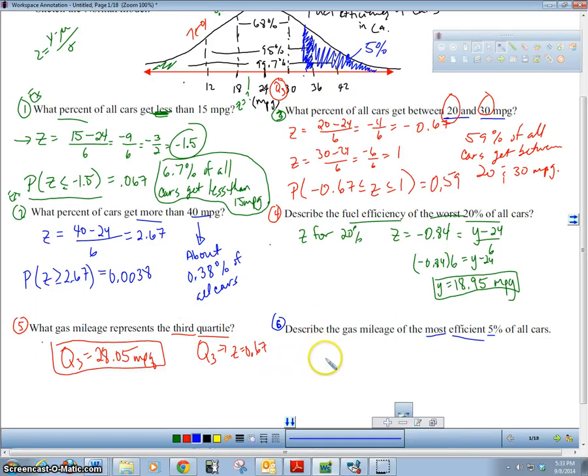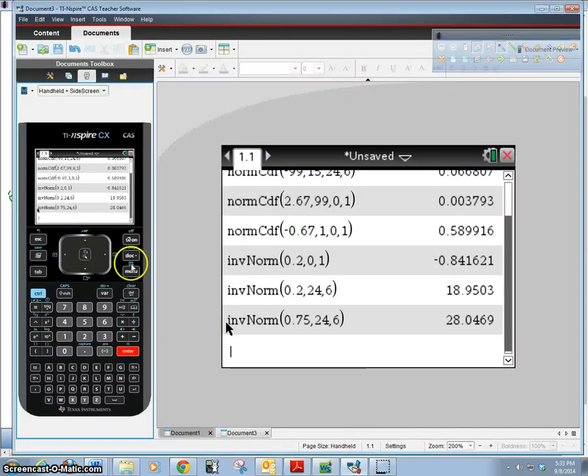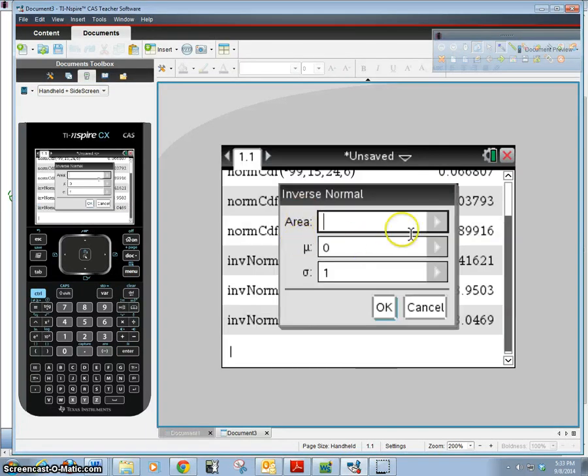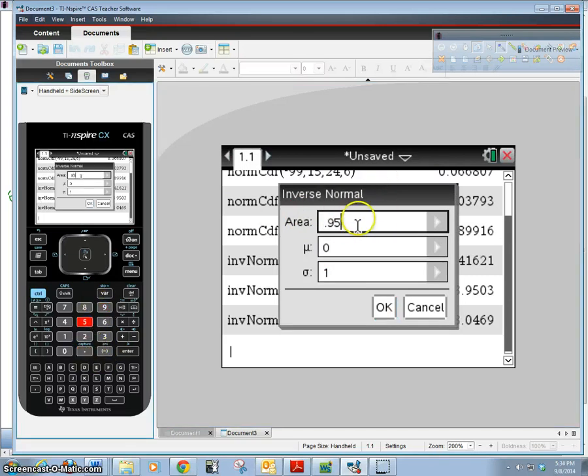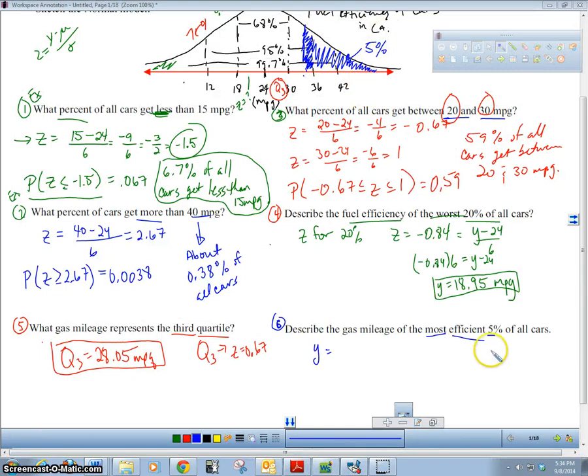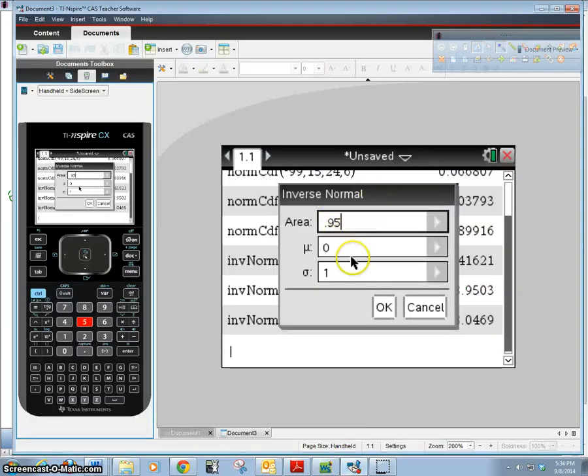Let's figure that out. Go to our calculator again, inverse norm. The upper five percent - our area is going to be 95 percent. Our calculator only calculates areas below the percentage, which is called a percentile. We're looking for the most efficient five percent, which is really the 95th percentile, or everything bigger than 95 percent of the data. The 95th percentile means they're in the top five percent; all the other 95 percent are down here. So 0.95 is going to be our area, 24 is our mu, 6 is our sigma. Enter: 33.87.